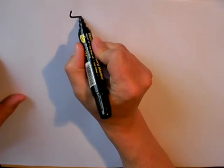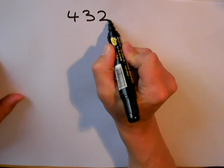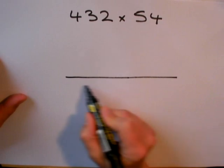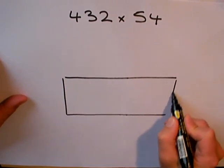My next example is a three-digit number, 432 multiplied by 54. So, I'm going to draw a grid that has enough room for three digits.